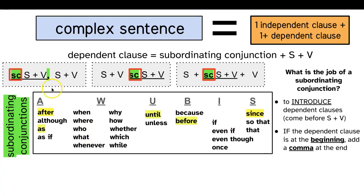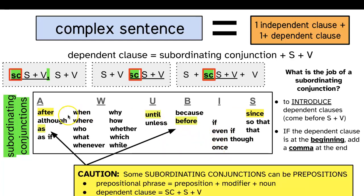We have some subordinating conjunctions that begin with A, some with W, a U, a B, an I, and an S — so our mnemonic is AWUBUS. We have to watch the ones highlighted in yellow, because those can also be prepositions. We know that if they're followed by a modifier and a noun they're prepositions, but if they're followed by a subject and a verb, they're subordinating conjunctions.